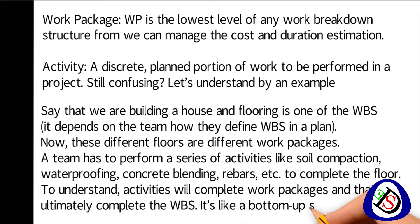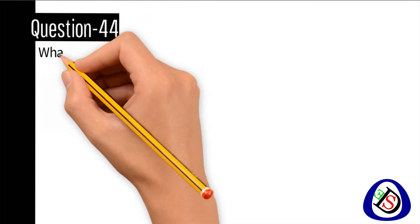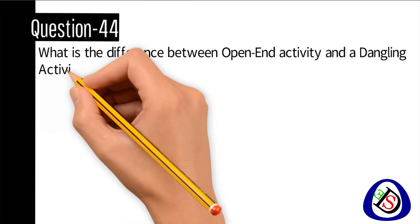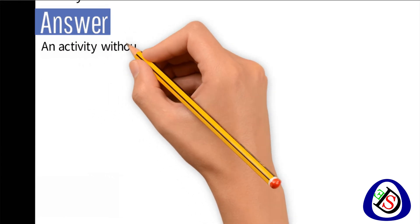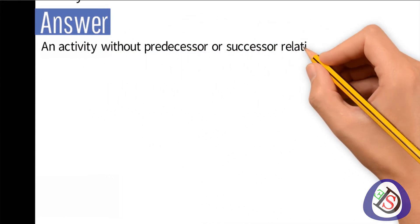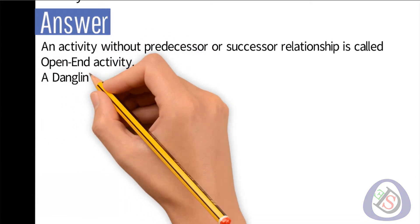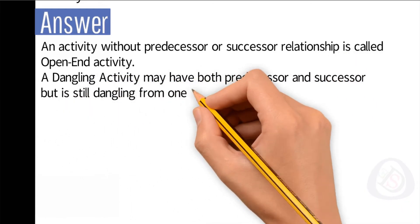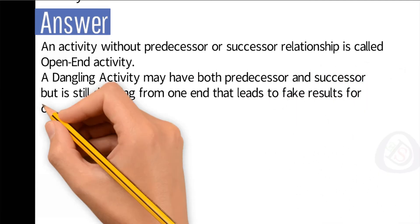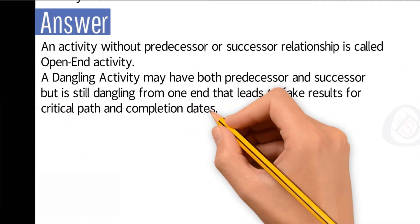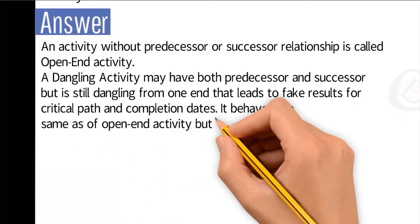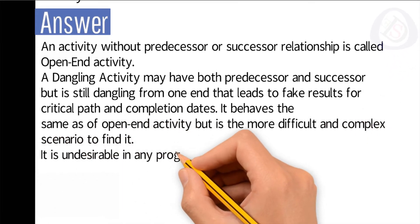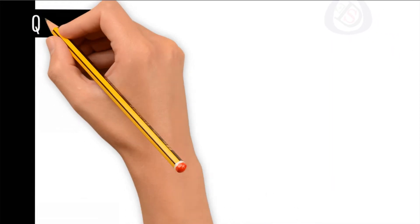It's like a bottom-up scenario. Question number 44: What is the difference between an open-end activity and a dangling activity? An activity without a predecessor or successor relationship is called an open-ended activity. A dangling activity may have both predecessor and successor but is still dangling from one end, leading to false results for critical path and completion dates. It is undesirable in any program and needs to be fixed always.